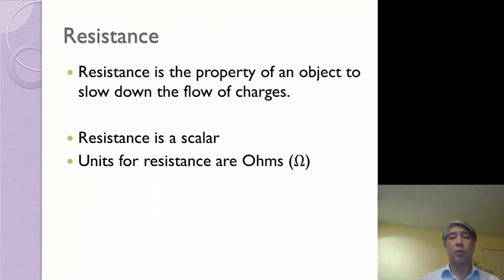So a couple of words that I'm going to go through. We're going to go through three words that are very similar. The words are resistance, which is the numerical value for what we're going to call a resistor. A resistor is the physical object. And then resistivity is a property of a material. So one by one, resistance is the property, or the numerical value of an object to slow down the flow of charges.